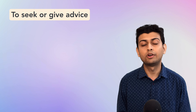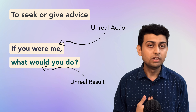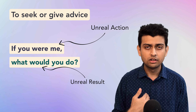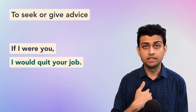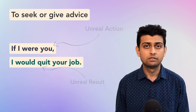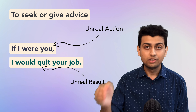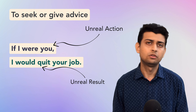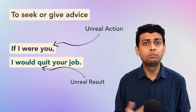To seek advice, you can say: 'If you were me, what would you do?' You are not me — we are different individuals, but if you were in my shoes, what would you do in such a situation? To give advice we say: 'If I were you, I would quit your job.' That means if I were in your place, I would quit the job you are currently doing — perhaps the pay is less or working conditions are not nice. Since we are different individuals, it's an impossible situation.